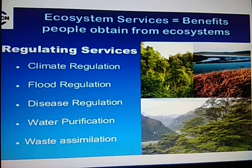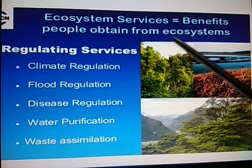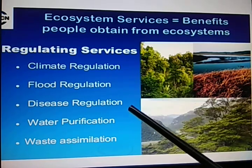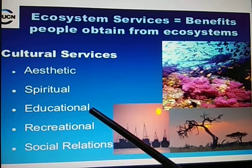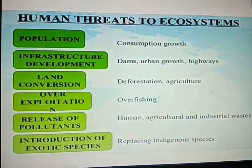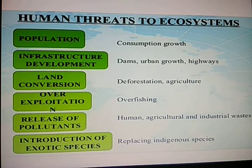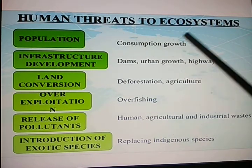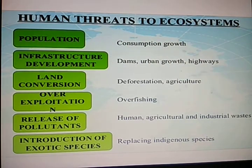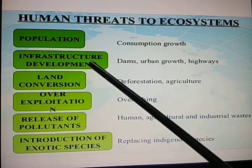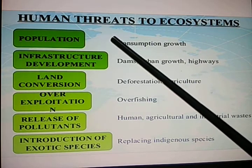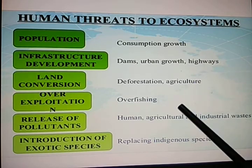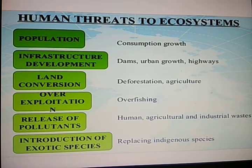We will see how the ecosystem benefits us. Ecosystem services benefit people in many ways: climatic regulation, flood regulation, disease regulation, water purification, and waste assimilation. It also helps in cultural services like aesthetic, spiritual, educational, recreational, and social relationships. However, human population growth is a threat to the ecosystem, leading to more consumption. Infrastructure development — dams, urban growth, highways, industrialization, and urbanization — also hampers the ecosystem and imbalances the environment.